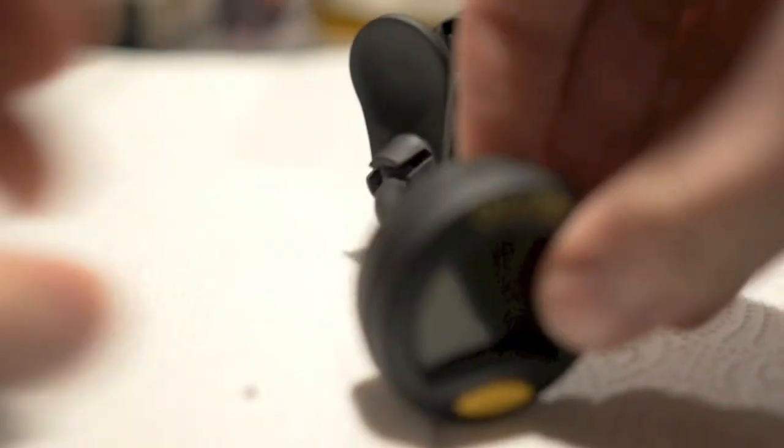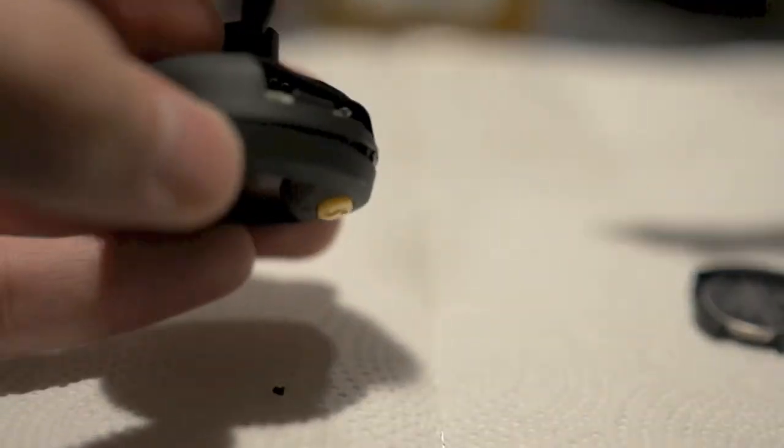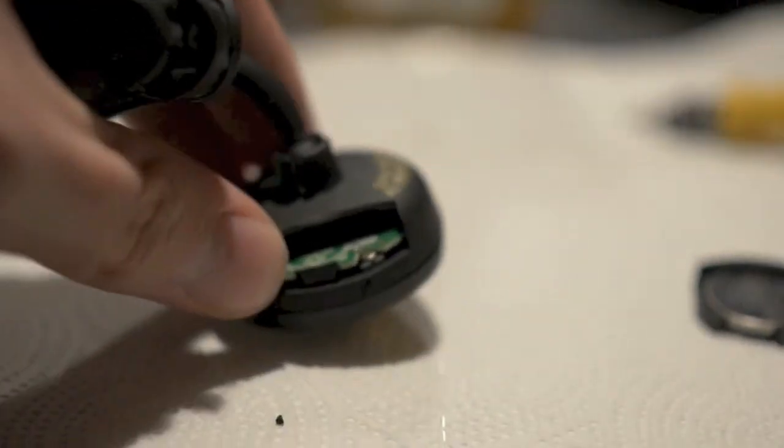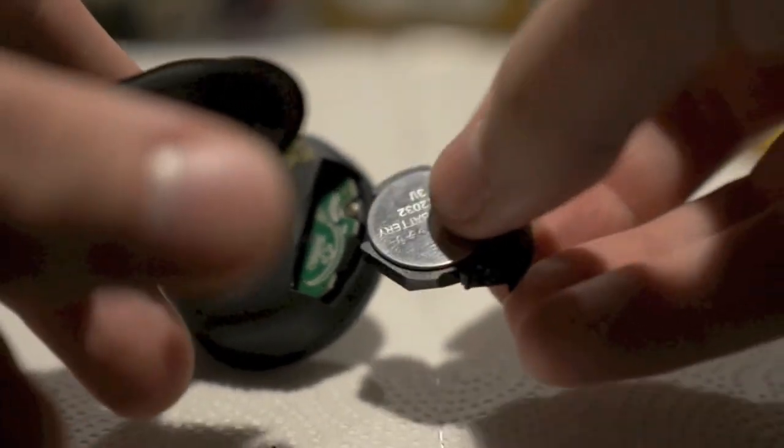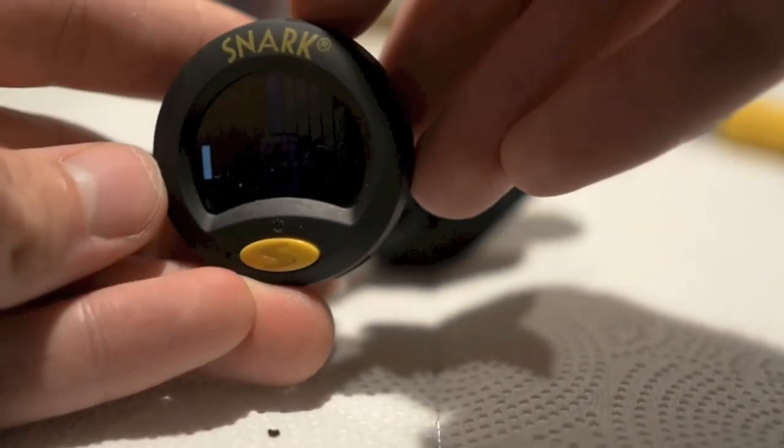So now that those are back in, you just line up the tempo button back with its spot. You click it back together, and then make sure you tighten your screw back down. And then you insert your battery again. And if you did all that right, it should turn right back on.